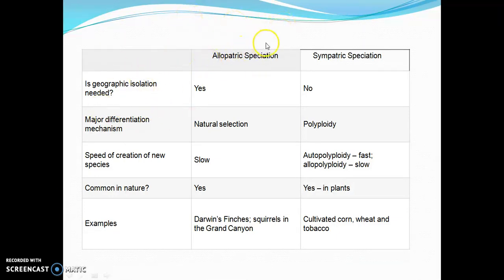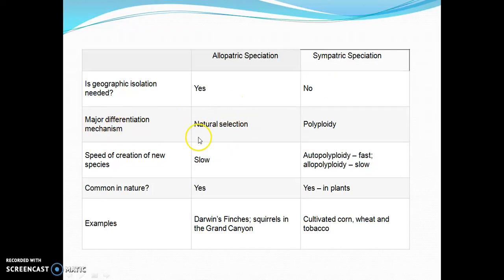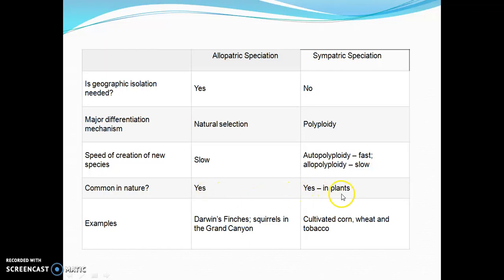Through this comparative chart we can understand the differences between allopatric and sympatric. In allopatric speciation, geographical isolation is needed — it is mandatory. In sympatric speciation, there is no geographic isolation. The major differentiation mechanism in allopatric is natural selection, while in sympatric it is polyploidy. The speed of creation of new species is slow in allopatric but fast in sympatric — autopolyploidy is fast and allopolyploidy is slow. Allopatric is very common in nature; sympatric is also common in plants. Examples of allopatric include Darwin's finches and squirrels in the Grand Canyon. Examples of sympatric include cultivated corn, wheat, and tobacco.